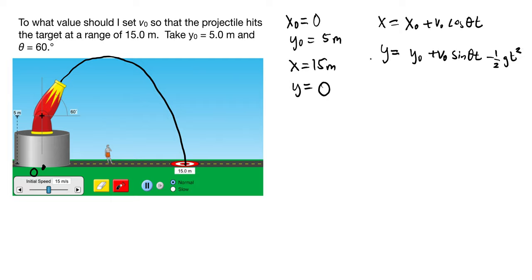And so if we do both of these equations, we're going to have a strategy: we're going to eliminate the time variable from the top equation, plug it into the bottom, and then use that to solve for V0.